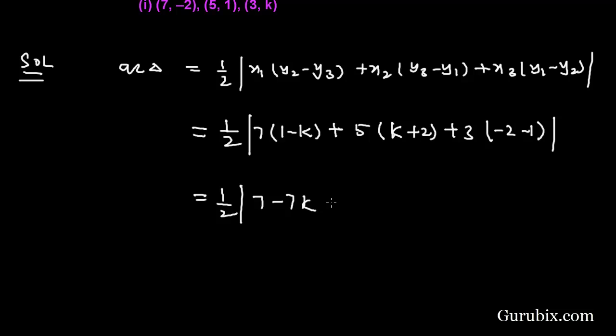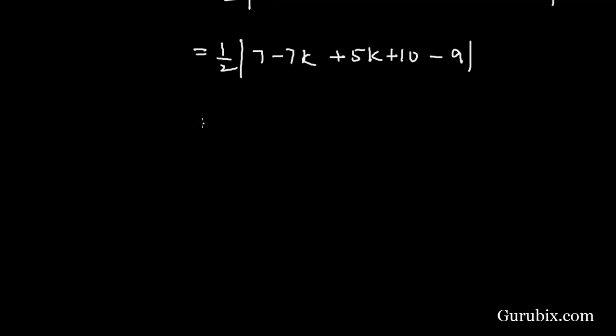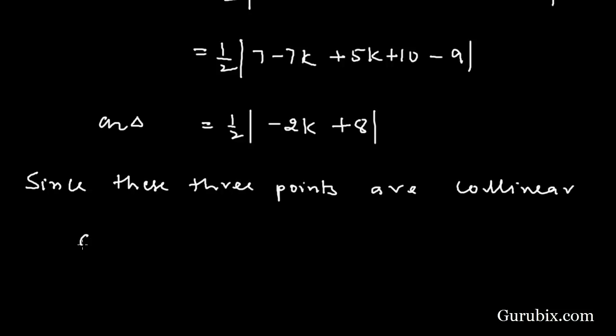7k plus 5k plus 10 minus 9. This value is equal to 1 over 2 minus 2k plus 8. So the area of the triangle is 1 over 2 mod minus 2k plus 8.